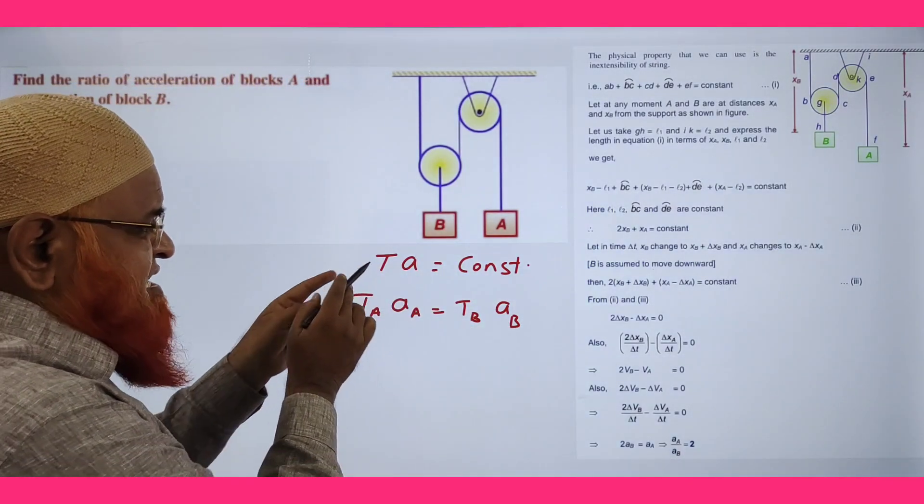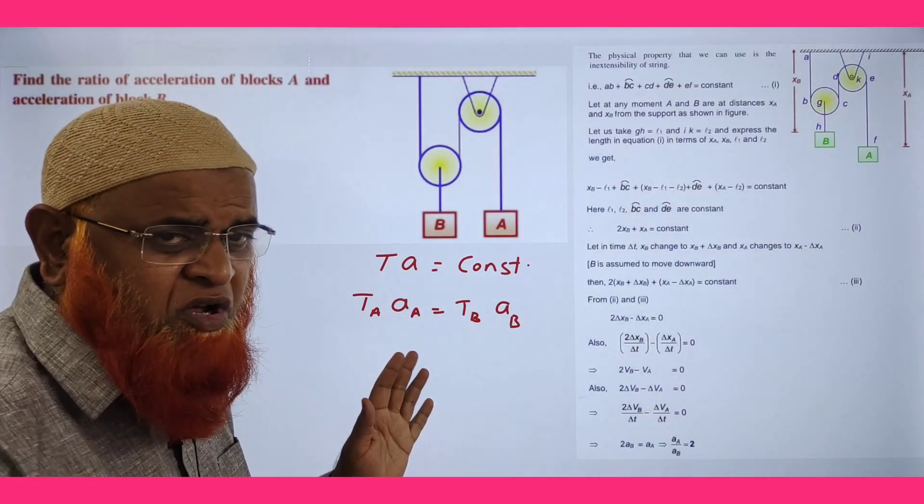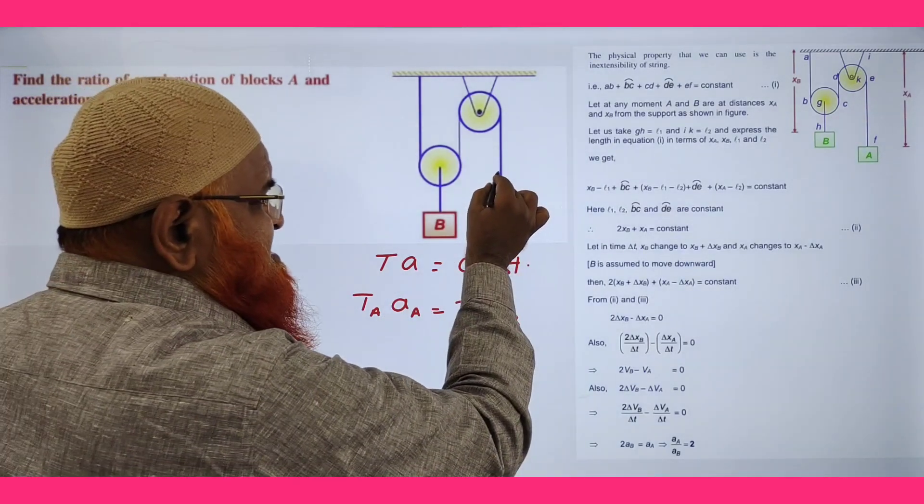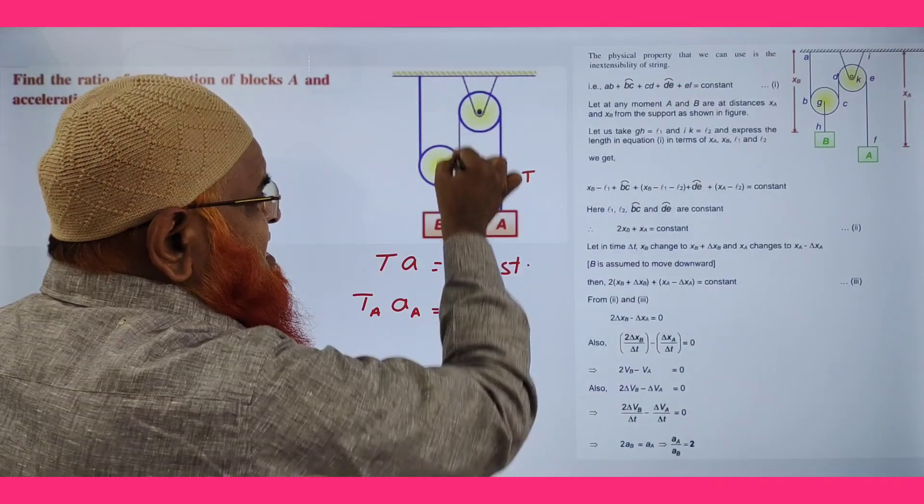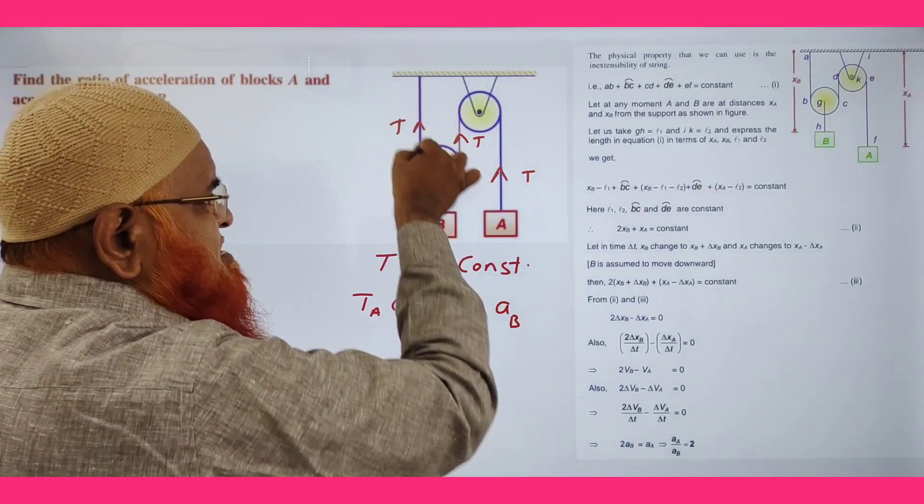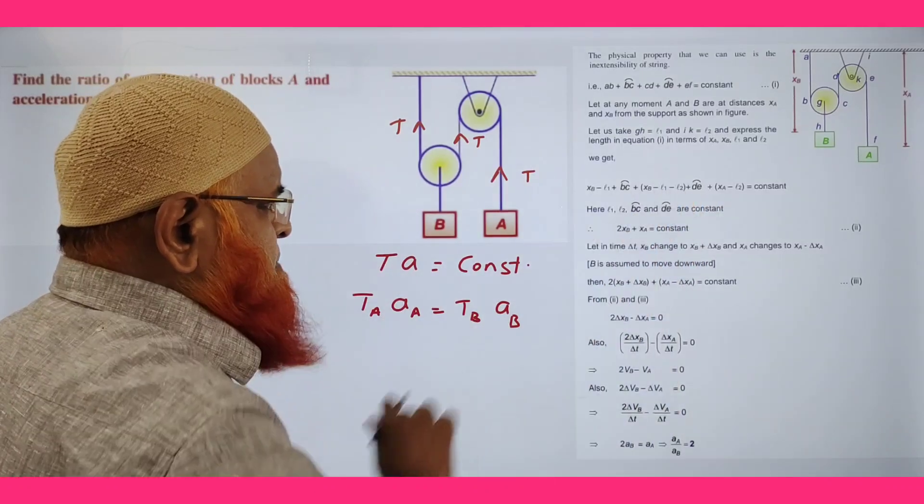Now, a simple logic is tension times acceleration is going to be constant. So TA times AA equals TB times AB. You can just see here tension is T, single thread here, here also tension is T, here also tension is T. Because this is a single rope, tension is going to be the same.